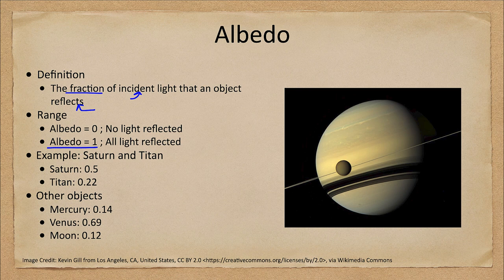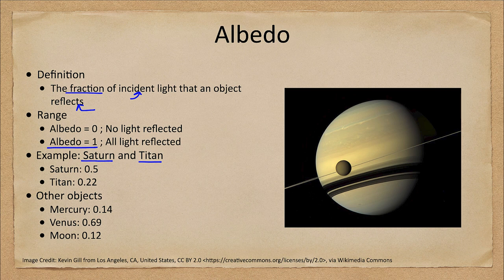Now let's look at one example here. We see in our image the planet Saturn, and in the foreground we see the moon Titan. Saturn and Titan are the same distance from the Sun, so they're receiving the same amount of sunlight. If they were made of the same materials, they would reflect the same amount of light and would look the same brightness.